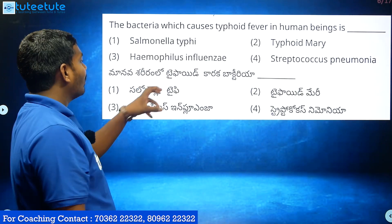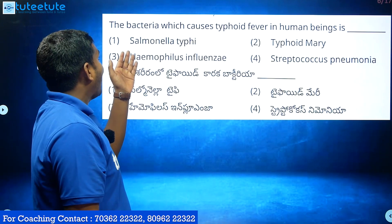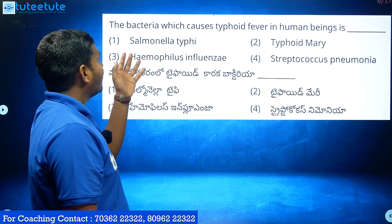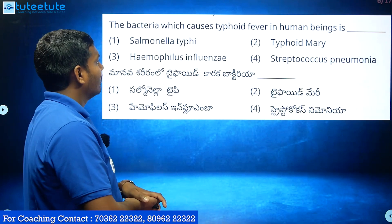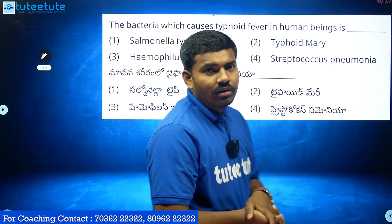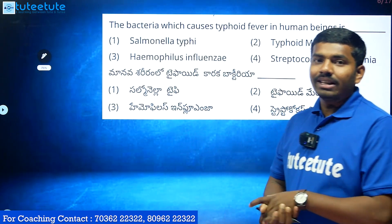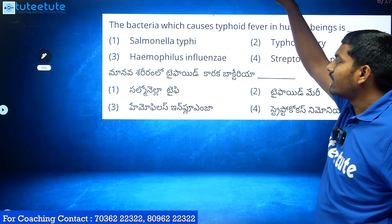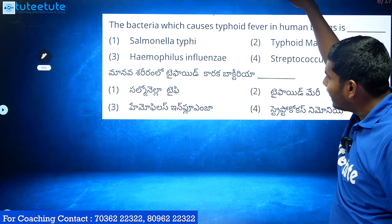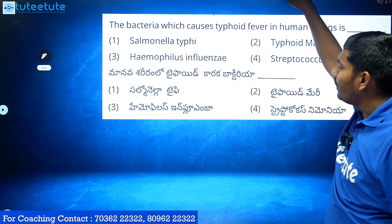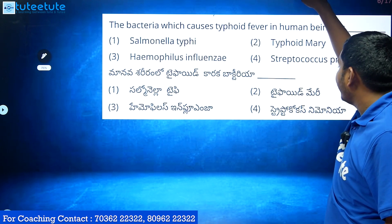What is the typhoid bacteria in human beings? The bacteria which causes typhoid fever in human beings. The options are: A. Salmonella Typhi. B. Typhoid Mary. C. Haemophilus Influenza. D. Streptococcus Pneumoniae.